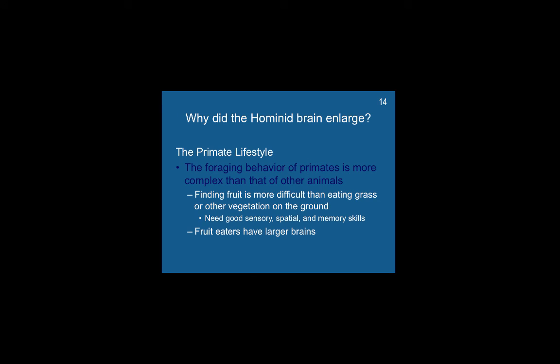So why did the hominid brain become so large compared to other chordates? Why is the cerebrum so much larger than the cerebellum? One primary factor is the primate lifestyle. The foraging behavior of primates is more complex than that of other animals — finding fruit is more difficult than eating grass or other vegetation on the ground. You need good sensory, spatial, and memory skills. You have to navigate in much greater levels of three-dimensional space, and you need higher memory skills. Fruit eaters therefore have larger brains.